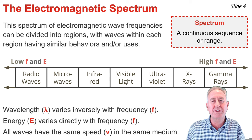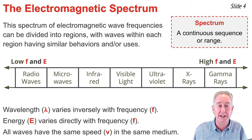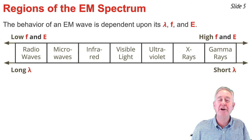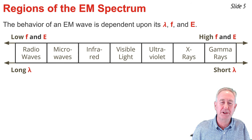Since wavelength is inversely proportional to frequency, the longer wavelength end is the low frequency end, that is the radio wave region, and the shortest wavelength end is the gamma ray region. The behavior of an electromagnetic wave is dependent upon its wavelength, frequency, and energy.